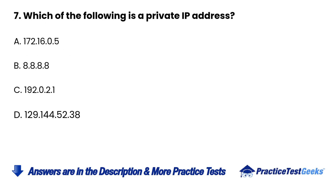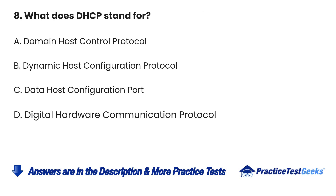Question 7: Which of the following is a private IP address? A. 172.16.0.5. B. 8.8.8.8. C. 192.0.2.1. D. 129.144.5.